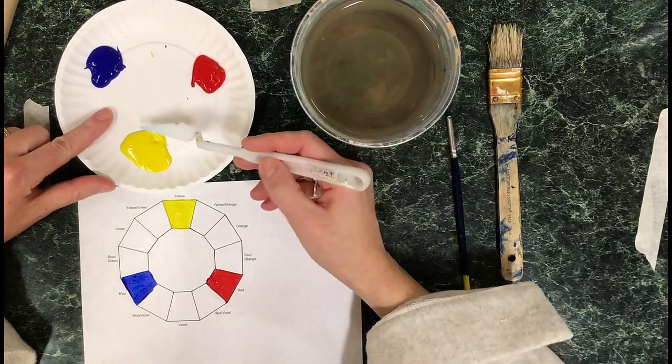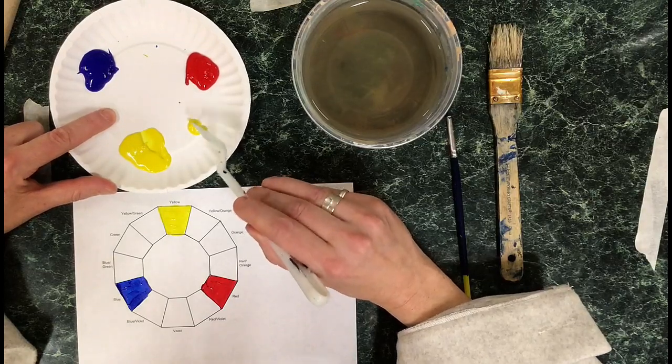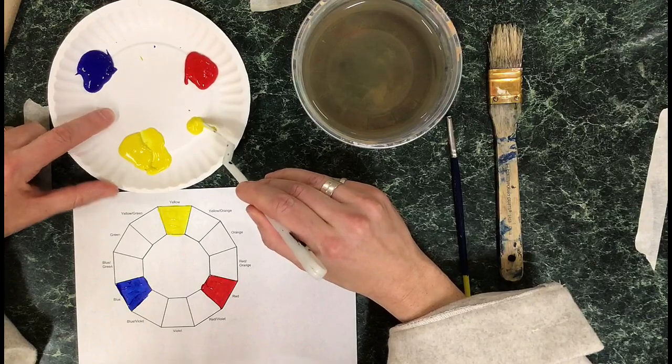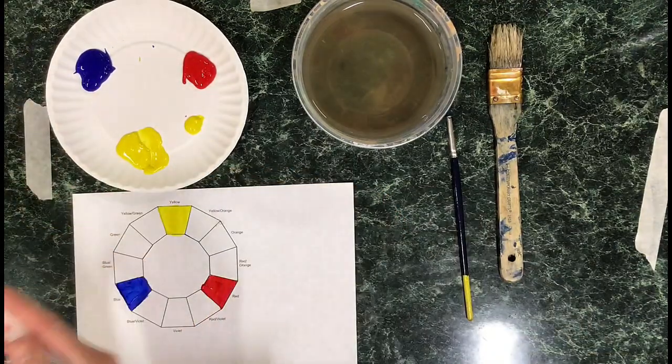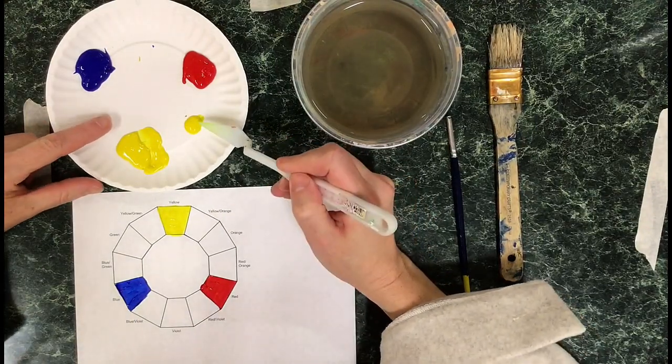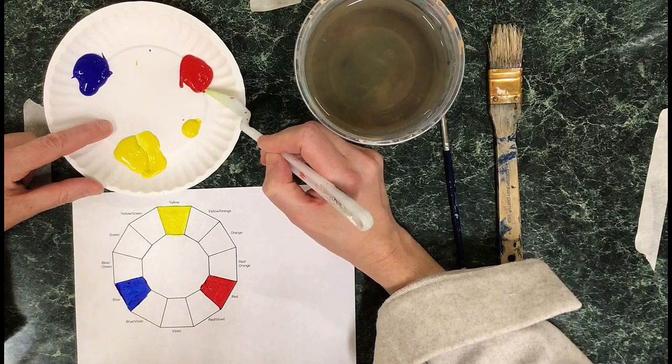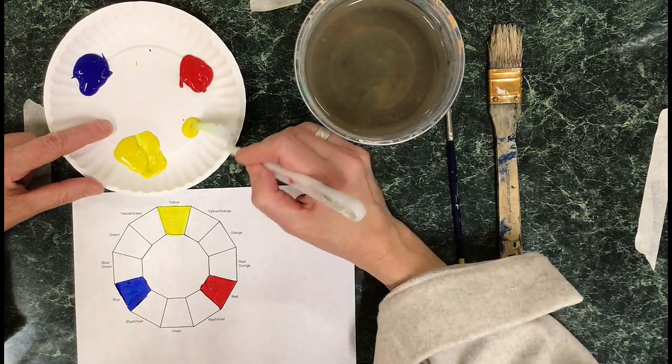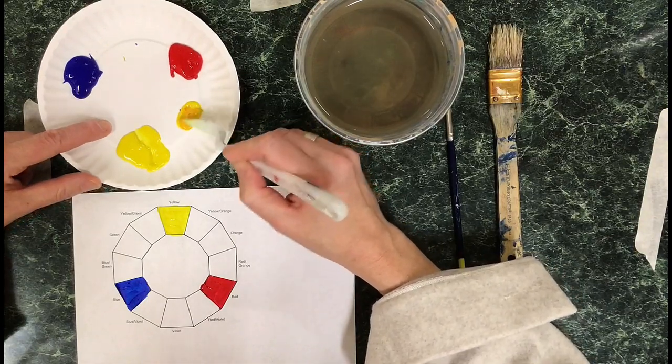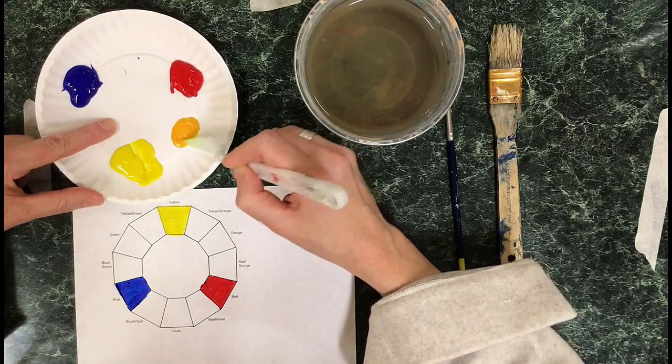Now I'm going to mix orange. You might think you use equal parts of yellow and red, but that is actually not true. Instead, you want to use quite a bit of yellow with your palette knife. I'm scooping a little yellow over into a pile, then I'm going to take the tiniest dot of red and add that to the yellow, because yellow doesn't have nearly as much pigment as red does.